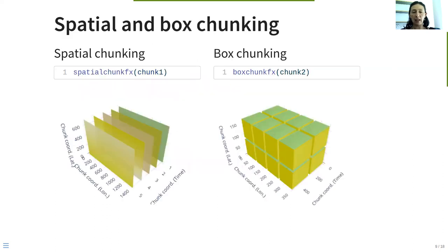This is the graphical representations of our chunking files. On the left side we have the spatial chunking, we have map layers for five time steps. On the right side we have the box chunking, and each box has the dimension 90 by 90 by 256.